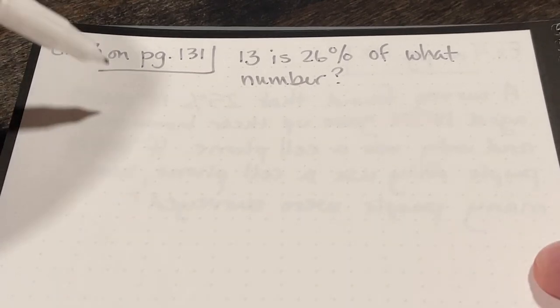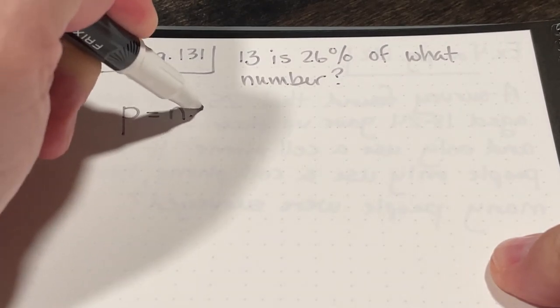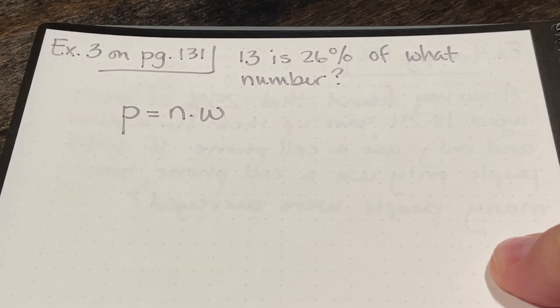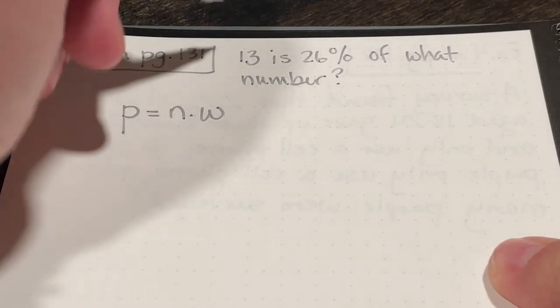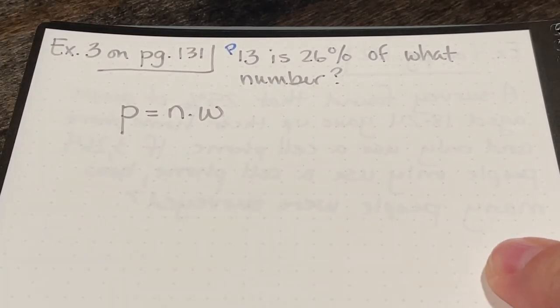In example 3, this is saying 13 is 26% of what number? I'm going to start off, once again, rewriting my percent equation. P, which is the part, equals n, the percent, times w, the whole.